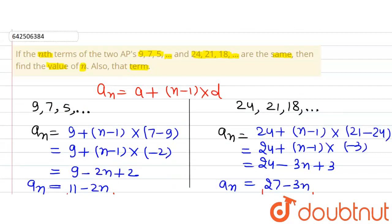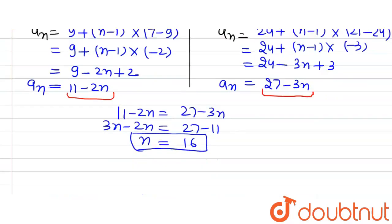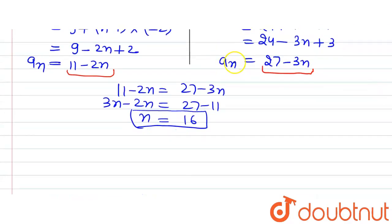We were supposed to find the value of n, so n = 16. This is the answer to the first part. The second part asks us to find that term. We can substitute n into either expression. Let's use the first one.